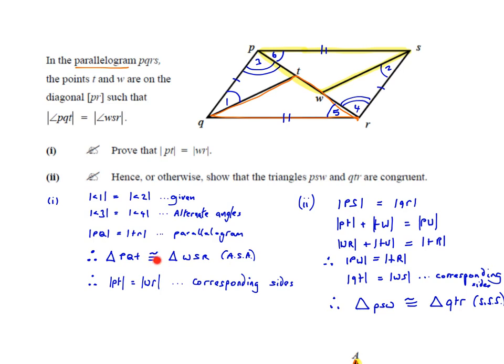We put in brackets the method we used: angle-side-angle. Because we know the two triangles are congruent, we can say therefore the length PT is equal to the length WR — because they are corresponding sides of congruent triangles. PT here is the corresponding side of WR in the other triangle. This is a very common type of question where you're asked to prove two sides are equal, and you need to prove congruence first in order to do that.